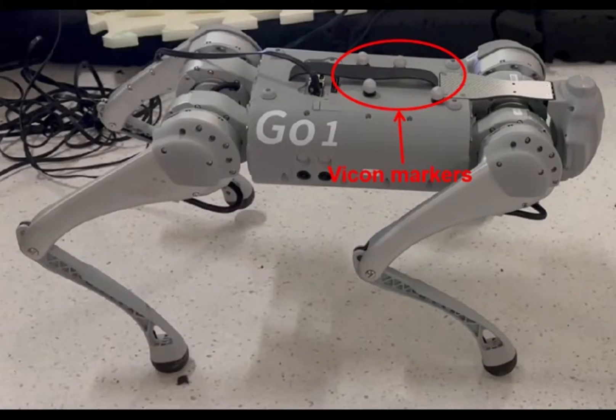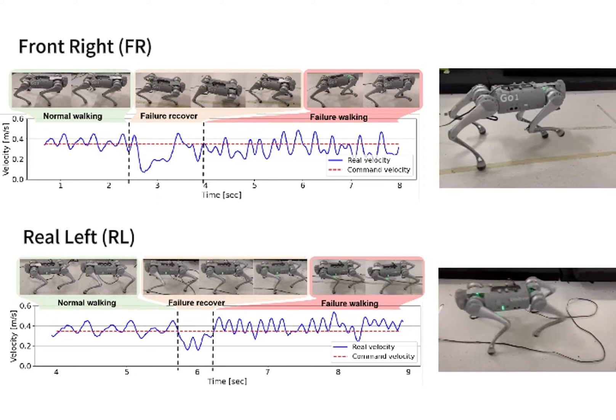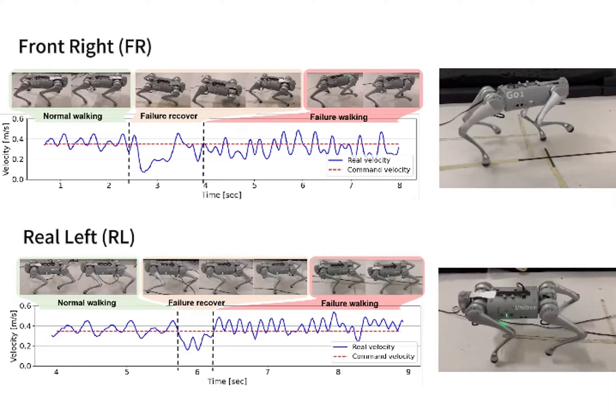For visualizing the velocity tracking performance in the complete failure scenarios, the real velocities obtained with Vicon are benchmarked with command velocities.